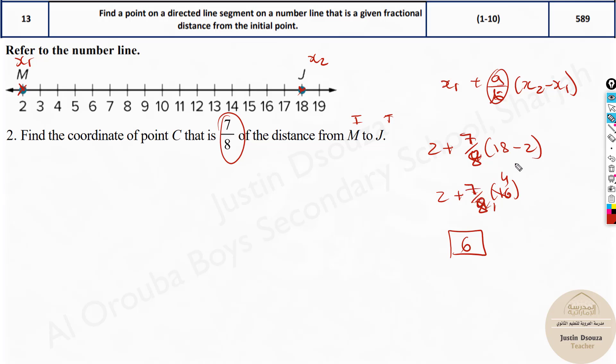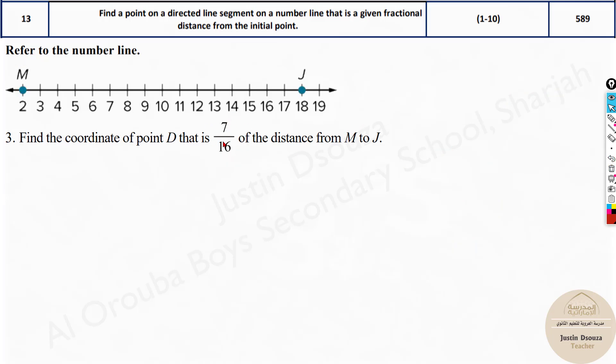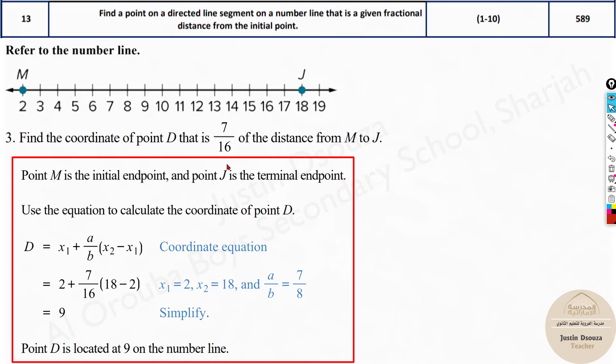So it is 7 by 8 over here. 7 times 2 is 14, 14 plus 2 is 16. So the answer will be 16 if the ratio is 7 by 8. Please do the others by yourselves. Same concept, same formula, only the ratio is changing. That's the formula over here and the point will be obtained using this formula.